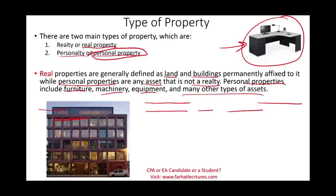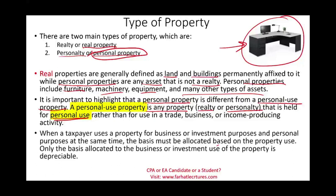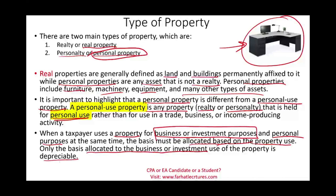Similarly, this van could be used for personal use, or it could be used for business — for delivery — making it personal property used in a trade or business. Sometimes you might use a property for both business and personal purposes, such as a vehicle. Under those circumstances, the basis must be allocated based on the property use. Only the basis allocated to the business or investment portion is depreciable. We'll talk about that more later on.